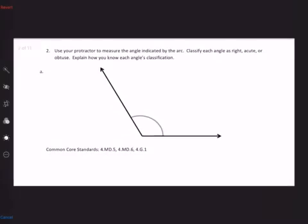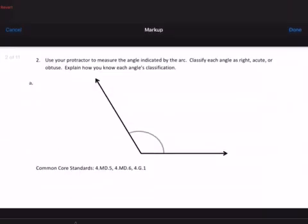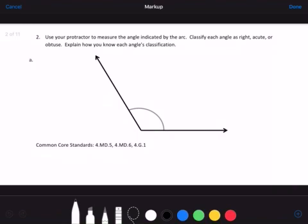So this one has quite a few steps in it. We need to make sure that we use your protractor to measure the angle indicated by the arc. Then you need to classify each angle, and your choices are right, acute, or obtuse. Then you have to explain how you know each angle's classification.